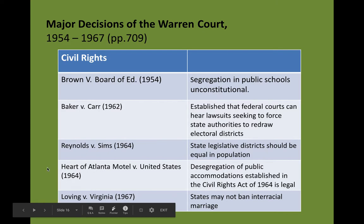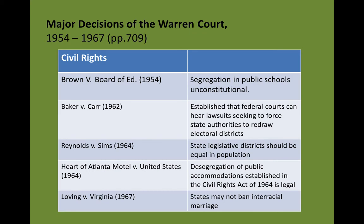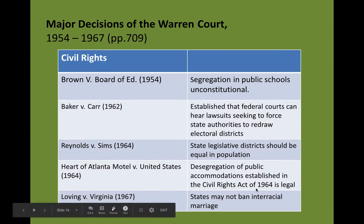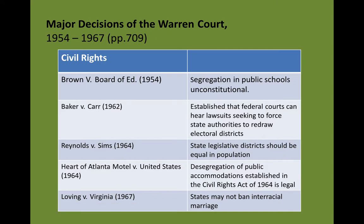Heart of Atlanta Motel is an interesting case. The Heart of Atlanta Motel was a motel along interstate highways in inner-city Atlanta, and they were refusing to rent rooms to African-Americans, many of whom were long-distance truck drivers. One of the things the court was able to draw upon was the fact that this hotel, while renting to white truck drivers, was denying black truck drivers the right to stay there — they were actually interfering with interstate commerce. Also, because you are providing public accommodations for anyone, you have to provide public accommodations for African-Americans too. Earlier in the year the Civil Rights Act of 1964 was passed, and one of the things the Heart of Atlanta Motel was trying to contest was that this was unconstitutional, but the court said nope — it's constitutional and you can no longer refuse to rent rooms to African-Americans.